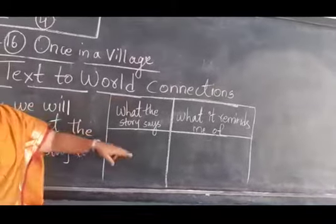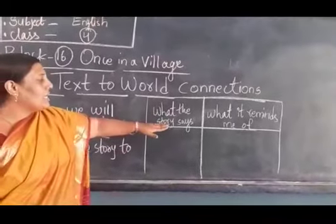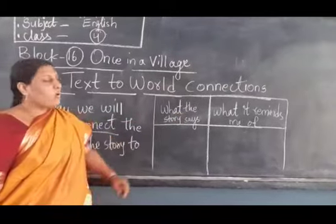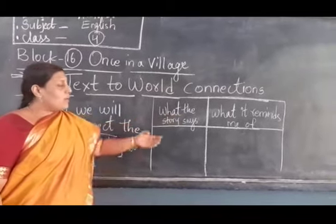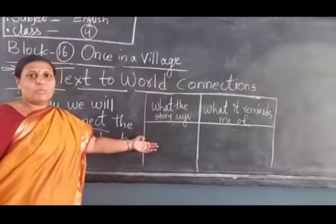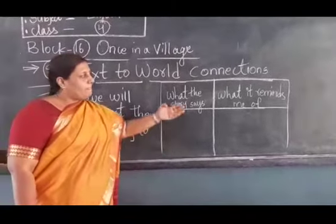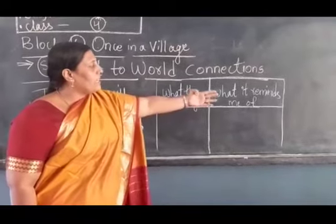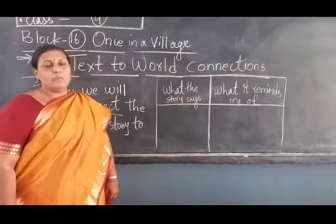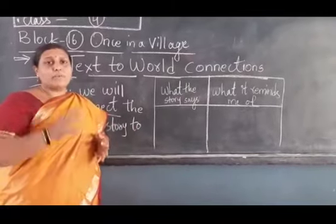This is a T-chart. See what is there here. What the story says, and what it reminds me of. What the story says — how the problem started, what happened, how it started, when it happened, where it happened, and how it was solved. Next — what it reminds me of. What is it reminding you, children? The story is telling you something. It is passing you some message, and you should connect that message to the real world.